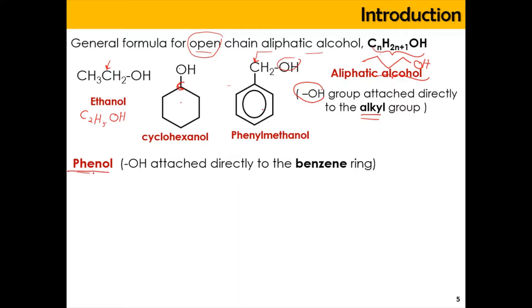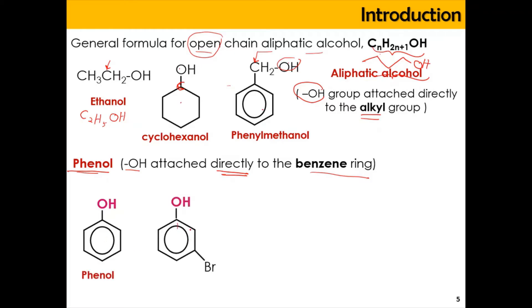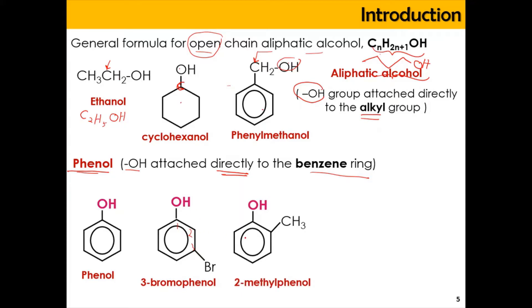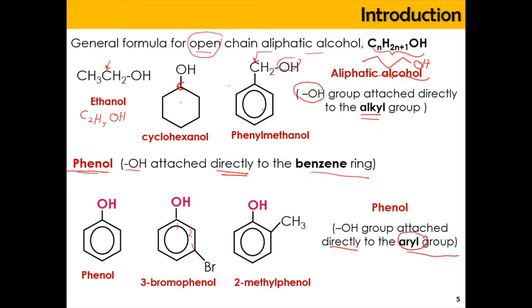Meanwhile, for phenol, it refers to the OH being attached directly to the benzene ring. For example, we have phenol, 3-bromophenol, and 2-methylphenol. For phenol, the OH is attached directly to the aryl group — aryl refers to the aromatic compound, which is the benzene ring. Be careful: if OH is attached to the carbon outside the ring, it is not a phenol.